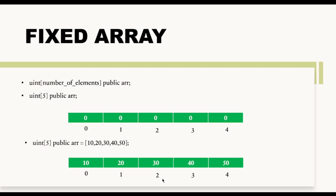All elements at index zero, one, two, three, four will be zero. Now if you declare an array by initializing it with 10, 20, 30, 40, 50, then in memory at the 0th index you will have 10, at the first index 20, at the second index 30, at the third index 40, and so on.